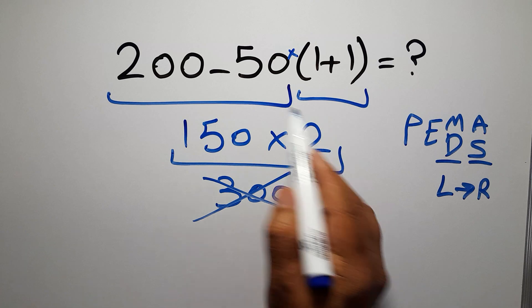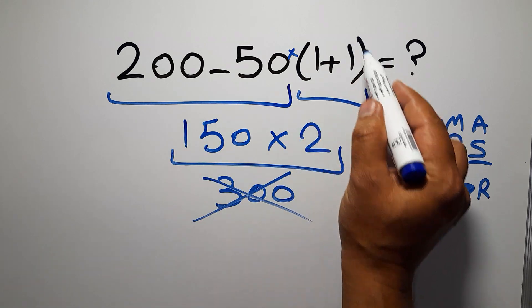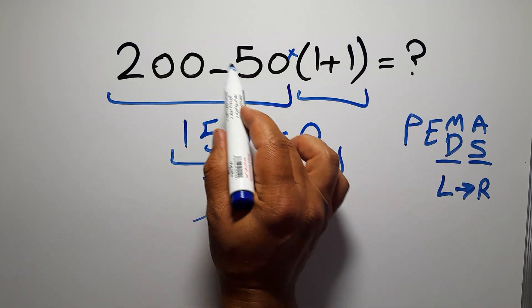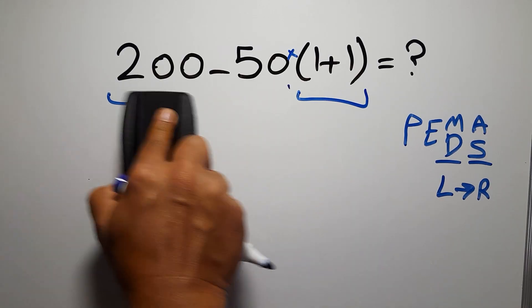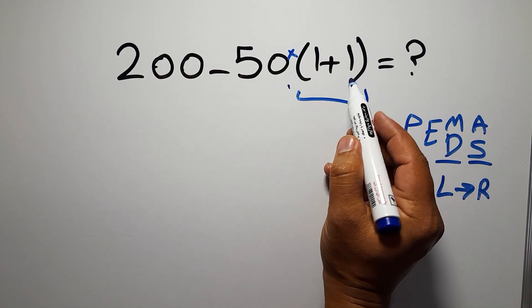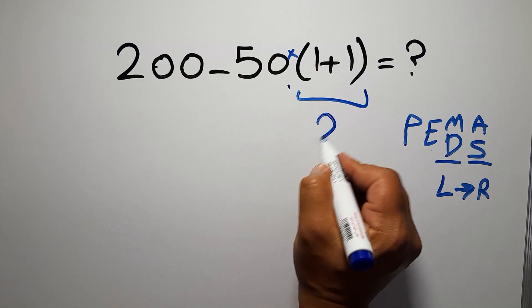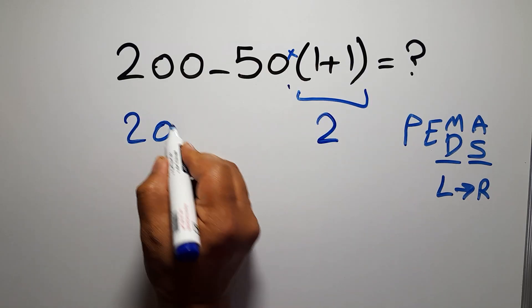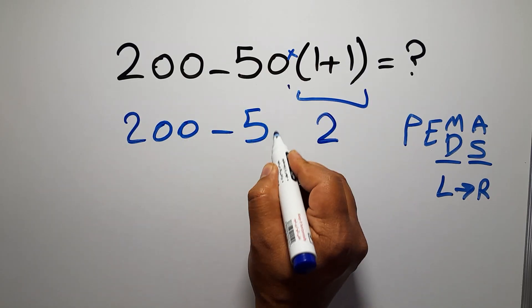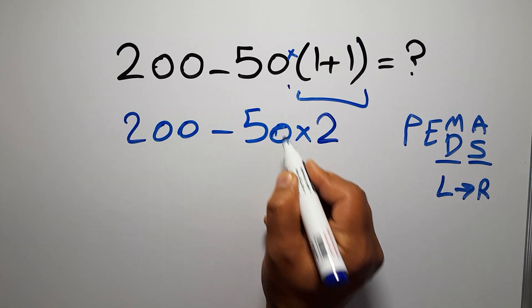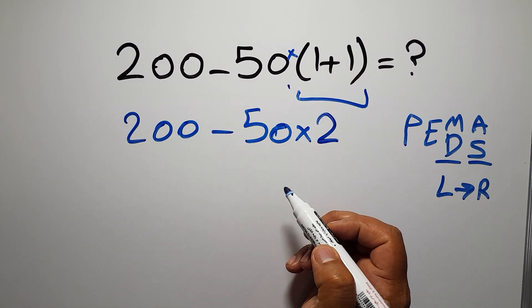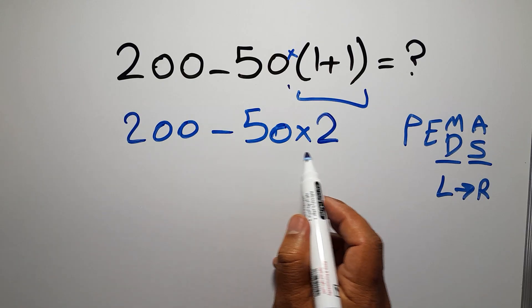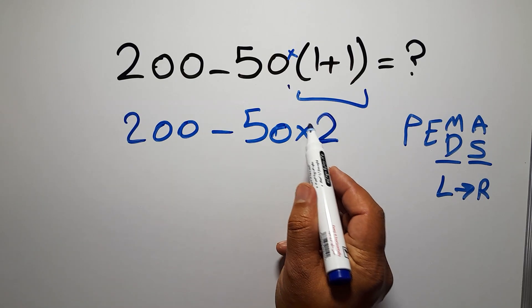So here, first we have to do this parentheses, not this subtraction. So first these parentheses. 1 plus 1 gives us 2. So 200 minus 50 times 2. Now we have 1 subtraction and 1 multiplication. In this step, first we have to do this multiplication,